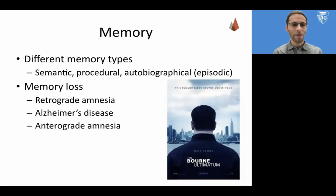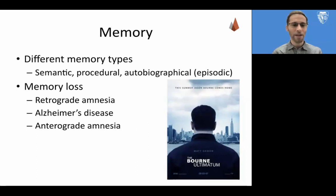And this is not limited to amnesia. Semantic memory is actually preserved in early-stage Alzheimer's disease. What about other types of amnesia, where people can't form new memories? This is referred to as anterograde amnesia. But still, even in a case like this, other memory types remain intact.